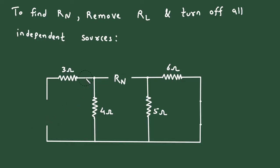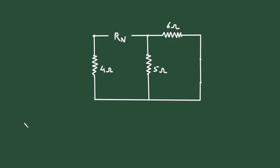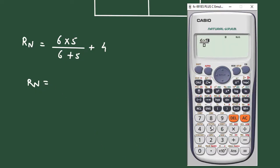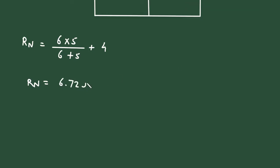So this current source will be open-circuited, which means we can remove this 3 Ohm resistance too. Now, here we can see this 6 Ohm and 5 Ohm are connected in parallel, and it is in series with this 4 Ohm. Therefore, the value of Rn equals (6 × 5) / (6 + 5) + 4, which gives 6.72 Ohm as the value of Norton's resistance Rn.